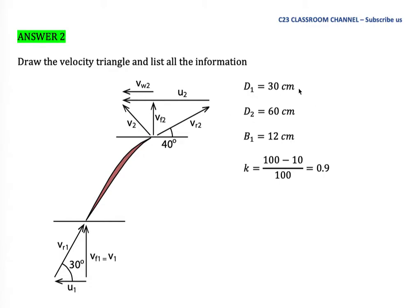We list all the parameters from the question: diameter at inlet, diameter at outlet, and blade width at outlet. Since blade thickness occupies 10% of the circumference, it reduces the effective flow area. Therefore K equals 1 − 0.10 = 0.9, meaning 90% of the area is available for flow. Be careful about how to calculate K.